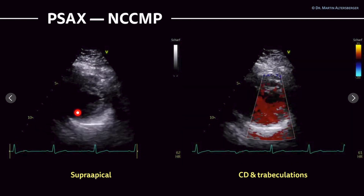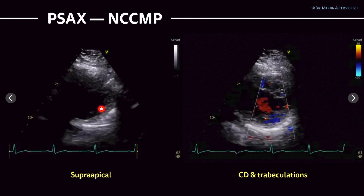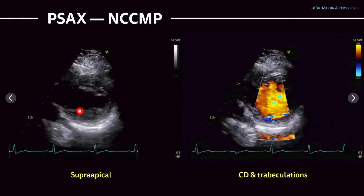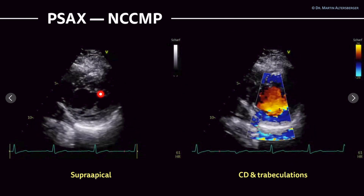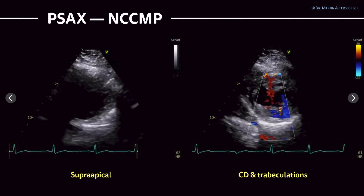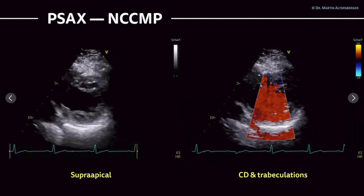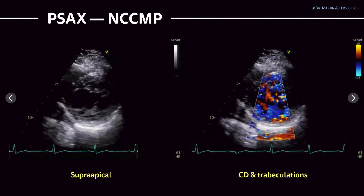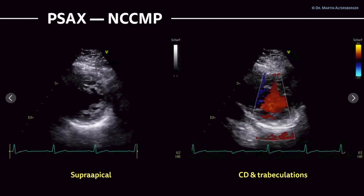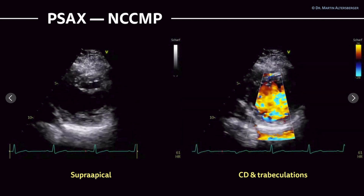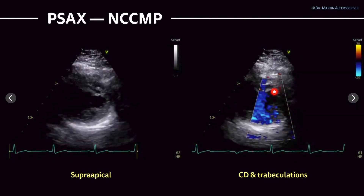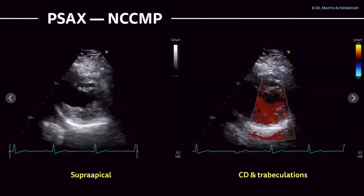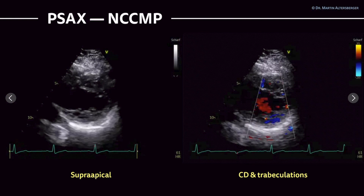To see the most apical regions — the suprapical cap — tilt the transducer even further downwards. In this case of non-compaction cardiomyopathy, even more trabeculations and larger areas of non-compacted versus compacted myocardium become visible, mostly in the inferior, inferolateral, and lateral regions of the left ventricle. Moving one intercostal space downward and tilting the transducer up and down often gives a better view of the suprapical cap. You can also use color Doppler with the PRF reduced to approximately 30 cm/s to better visualize blood flow within the trabeculations, further supporting the diagnosis. Optimally, contrast imaging is used, which will be covered in another lecture.